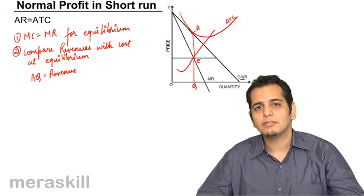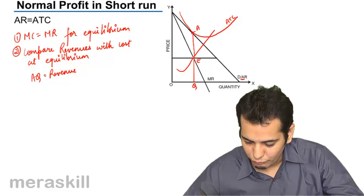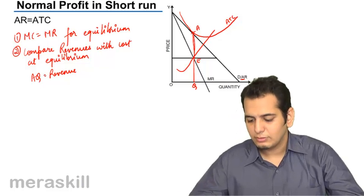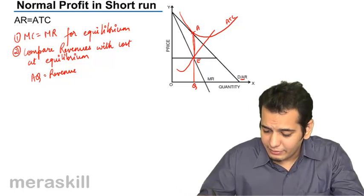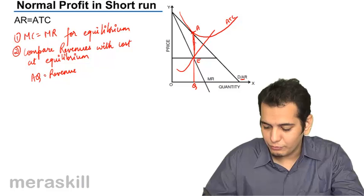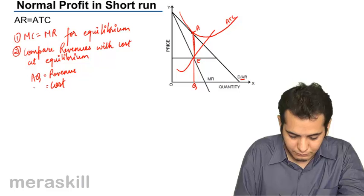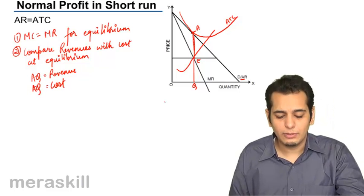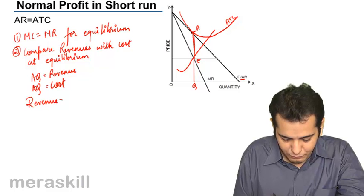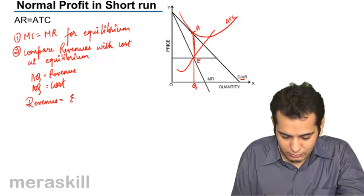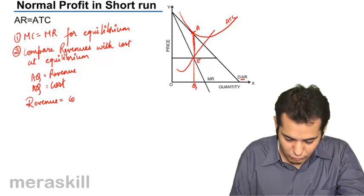Now, let me go up till the cost curve to find my cost from equilibrium point. So, from point E, I move upwards till my cost curve. I again reach at this point only. That is A point. So, my cost is again AQ.